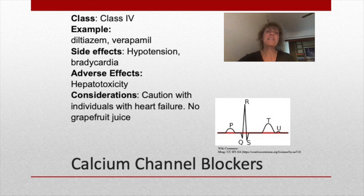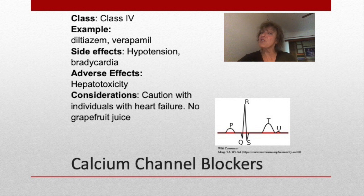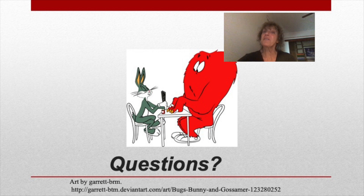Class 4 anti-dysrhythmics are calcium channel blockers, commonly ordered for various cardiovascular disorders. Blocking calcium channels slows conduction and stabilizes dysrhythmias. There are calcium channels in both the heart and the arterioles; in the vessels, coronary arteries are dilated so the heart doesn't have to work as hard and blood pressure decreases. These medications are commonly used for hypertension, tachycardia, and angina. Examples include diltiazem and verapamil. Side effects include hypotension and bradycardia; an adverse effect is hepatotoxicity, so liver function should be monitored. Caution is advised for individuals with heart failure and grapefruit juice should be avoided. This concludes the review of drugs for dysrhythmias.